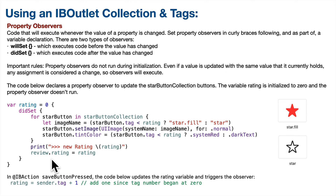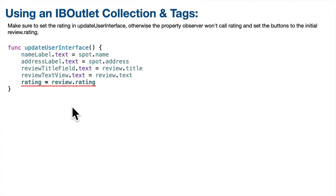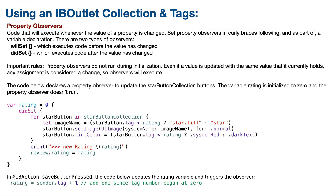We do need to use this rating property — a property of the review table view controller class — to update the rating property in our review object. One critical thing: when we declare and initialize our review property, the property observer doesn't run for initialization, so when we set it to zero, this code in did set does not run. So in order for our buttons to show up with any rating value that's already been set, we'll set rating to review dot rating inside update user interface. This is why we chose to use a property observer — anytime we change the rating value, whether in update user interface or our IB action, we automatically update the button collection.